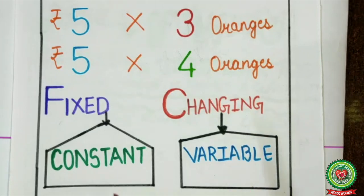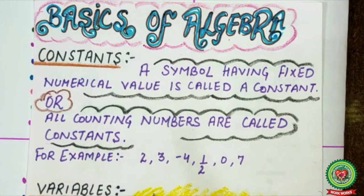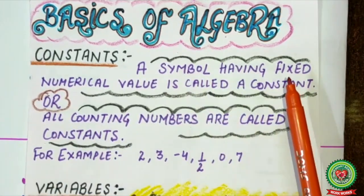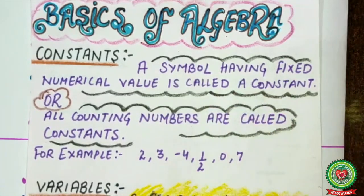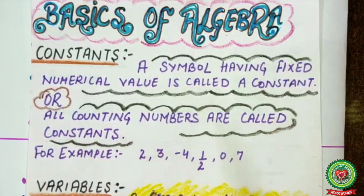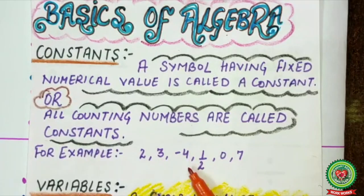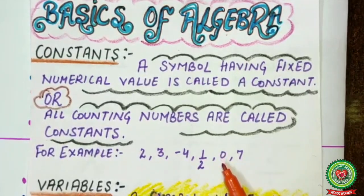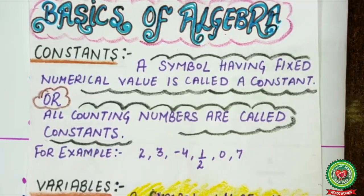So, the combination of constants and variables with a suitable operation is known as algebra. What is a constant? A symbol having a fixed numerical value is called a constant. Or you can say, all counting numbers are called constants. For example, 2, 3, minus 4, 1 upon 2, 0, 7 — these all are examples of constants.